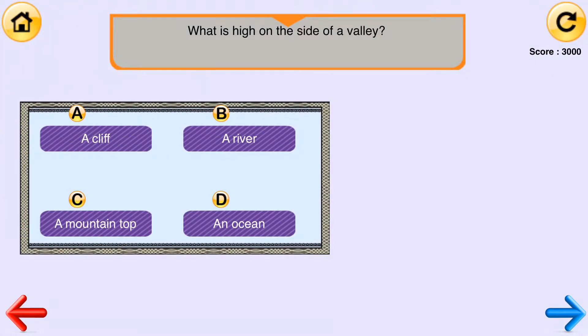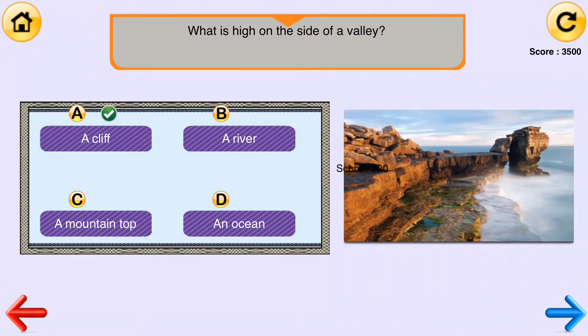What is high on the side of a valley? A cliff, a river, a mountaintop, or an ocean? The answer is a cliff.